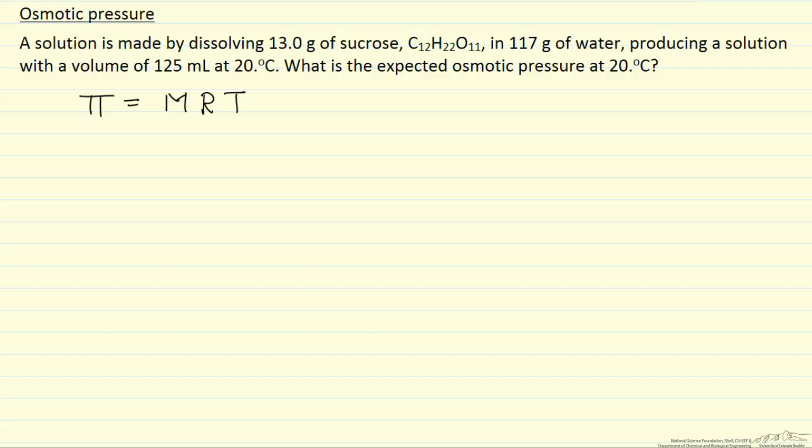So the first thing we need to do is calculate molarity, and so we need a number of moles per liter. So we have 13 grams of sucrose, and now what we need is the number of grams per one mole of sucrose. And so we have 12 carbons, 22 hydrogens, and 11 oxygens.